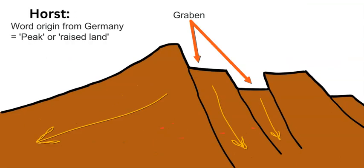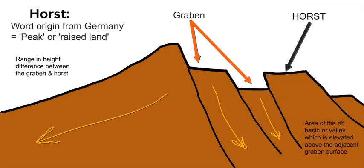Just like a graben, a horst is another specific tectonic landform associated with rift valley formation. It forms from normal faults where one section of crust in between the normal faults slides down — that is the graben or half-graben.